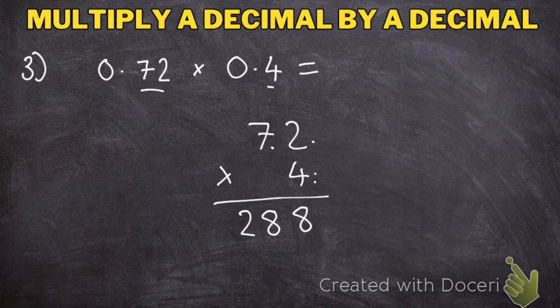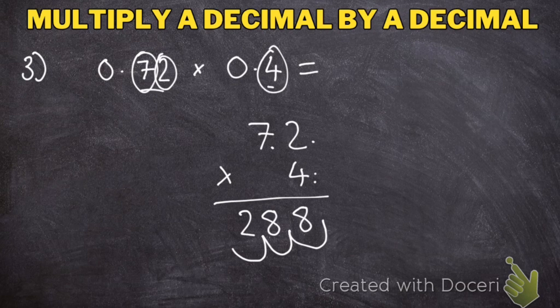My final answer is not 288. Let's have a look. There's 1 decimal place, 2 decimal places, 3 decimal places. So I'm going to go 1, 2, 3 and put my decimal point there. Because that's at the front of the number, I'll also need to put a placeholder 0. So my answer is 0.288.